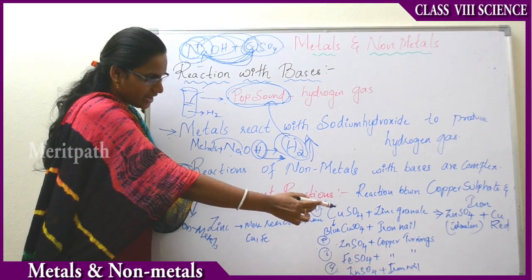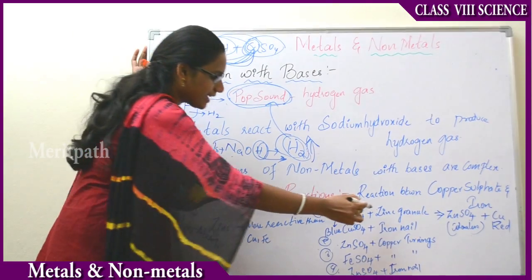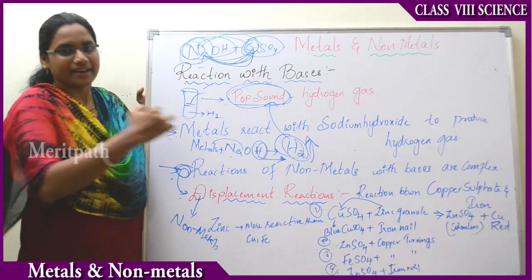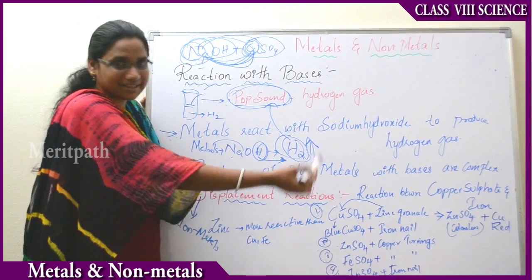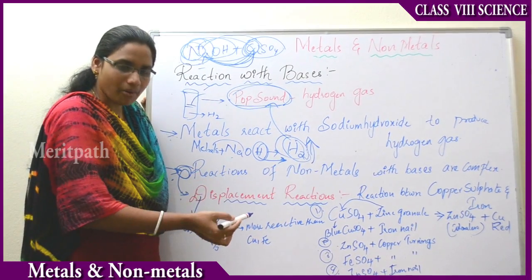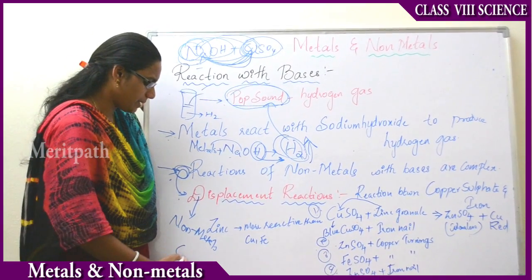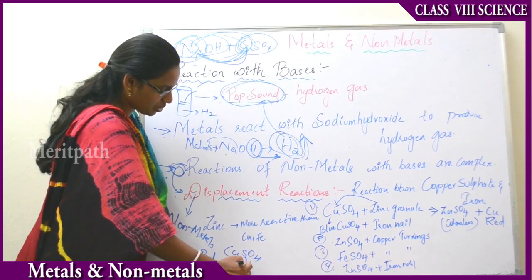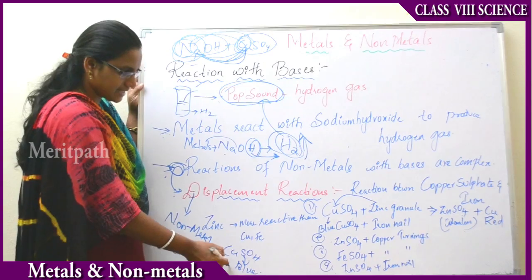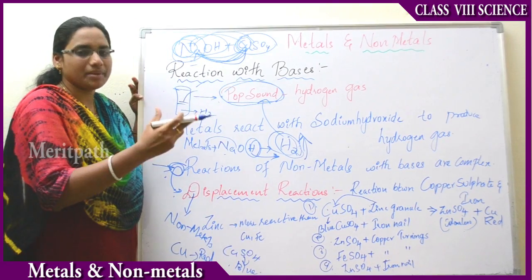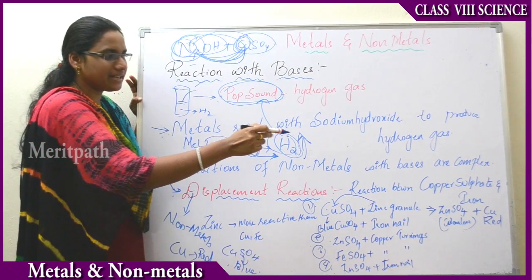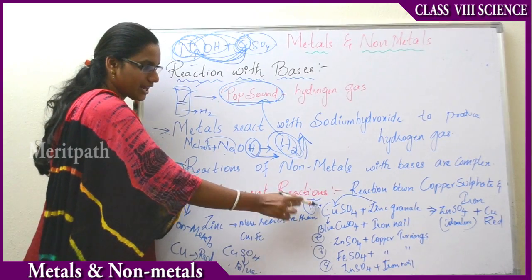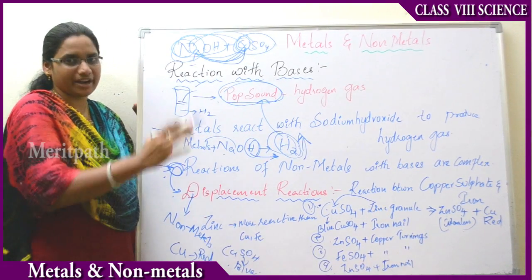In the first reaction, copper sulfate reacts with zinc granules. Displacement occurs: zinc displaces copper from copper sulfate, forming zinc sulfate and releasing copper. Zinc sulfate is a colorless compound, while copper is red. Previously, copper sulfate appears as blue crystals, and when reacted with zinc, the blue copper sulfate is converted to colorless zinc sulfate and red copper — so the color changes from blue to red.